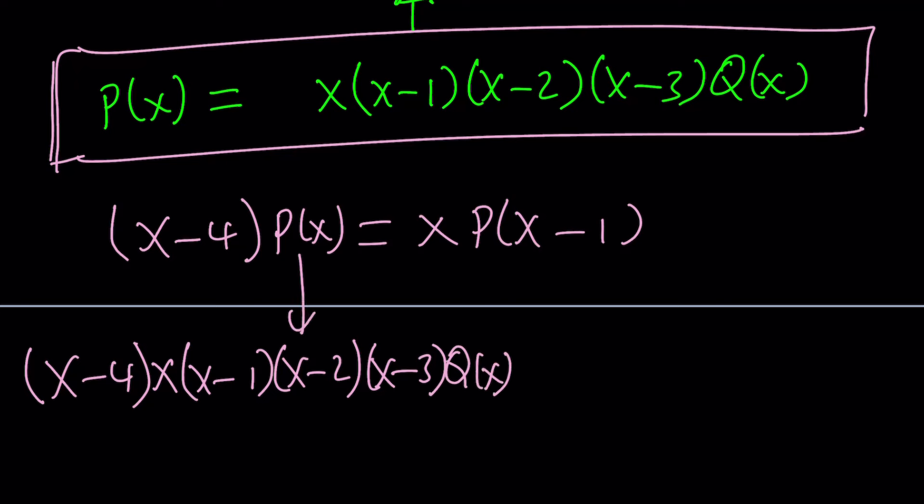What about the right-hand side? It's X times P of X minus 1. If this is P of X, what is P of X minus 1? You should replace X with X minus 1 and you'll get P of X minus 1. It's that simple, because polynomials are functions, but special functions.